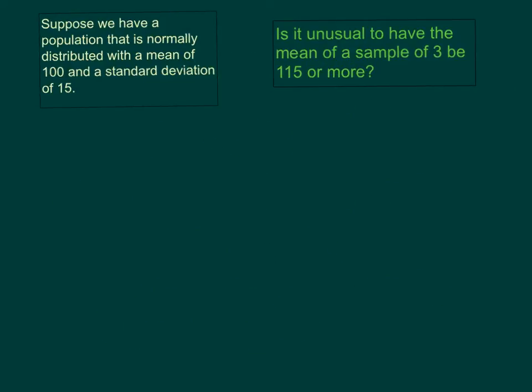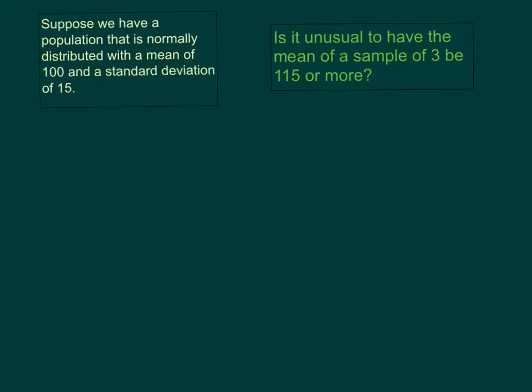So let's take that same population and change it up a little bit. Let's still have a normally distributed population with a mean of 100 and a standard deviation of 15, but instead let's see if it's unusual to have a mean from a larger sample. Let's change the sample size to 20 and see if it's unusual to have a mean of 105 or more.